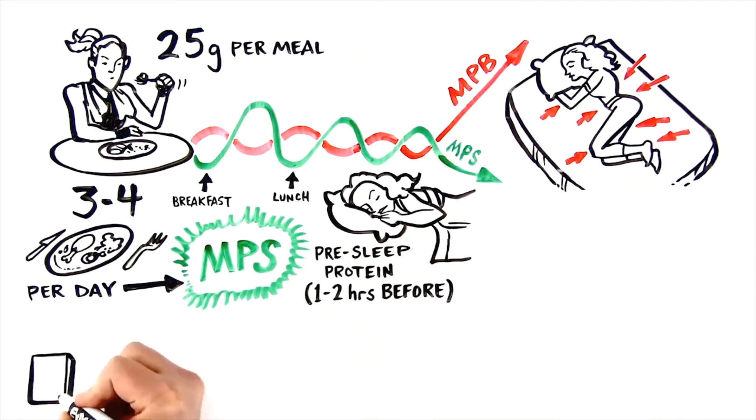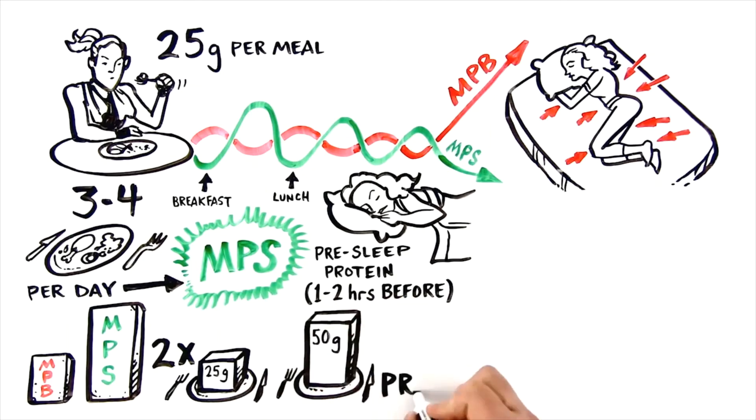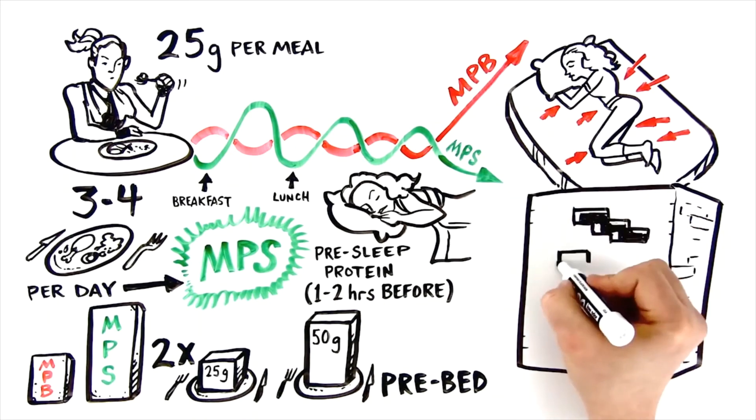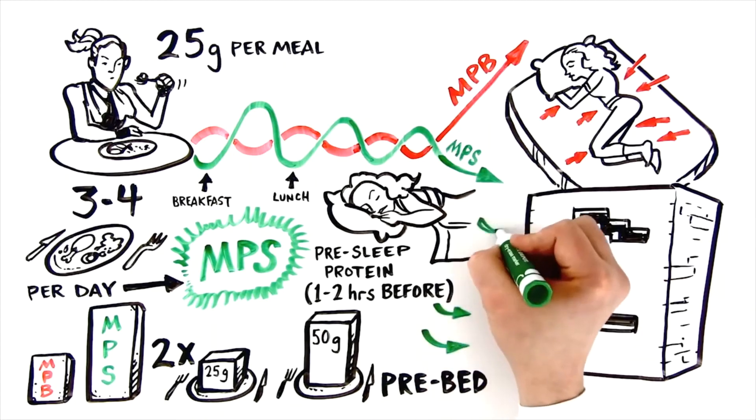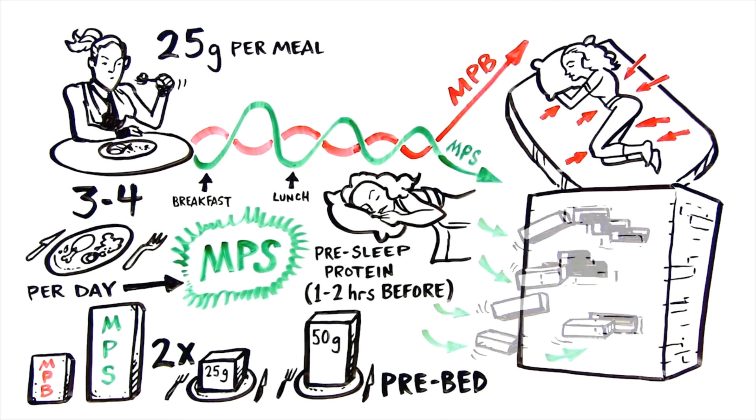The dose of protein pre-sleep should be approximately twice the amount of protein per serving than you'd eat during the day because you won't eat again for another eight hours. What you can quickly see is with pre-sleep protein, you lose less bricks and the wall gets more repair.